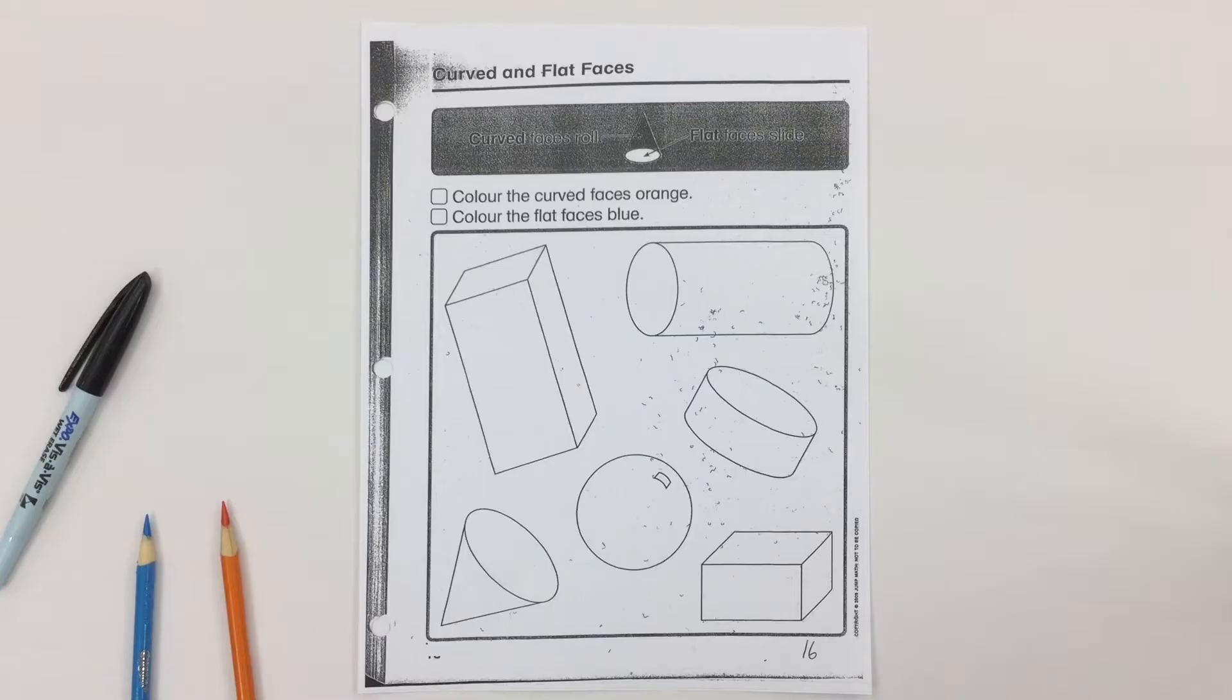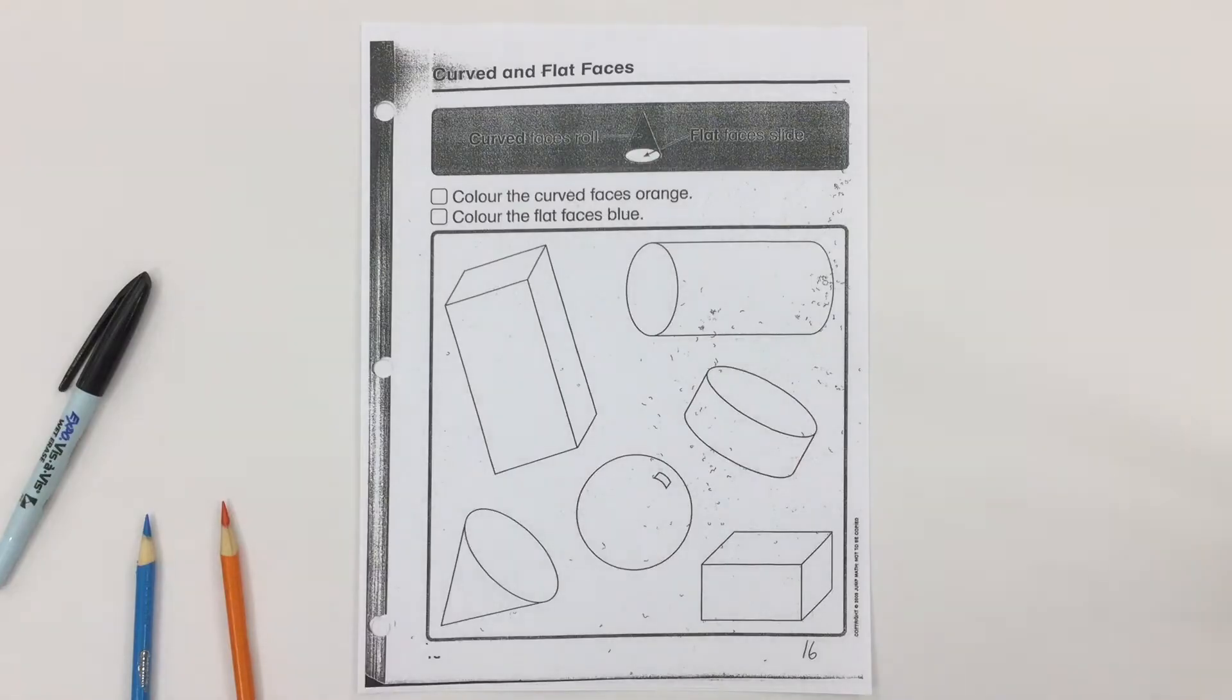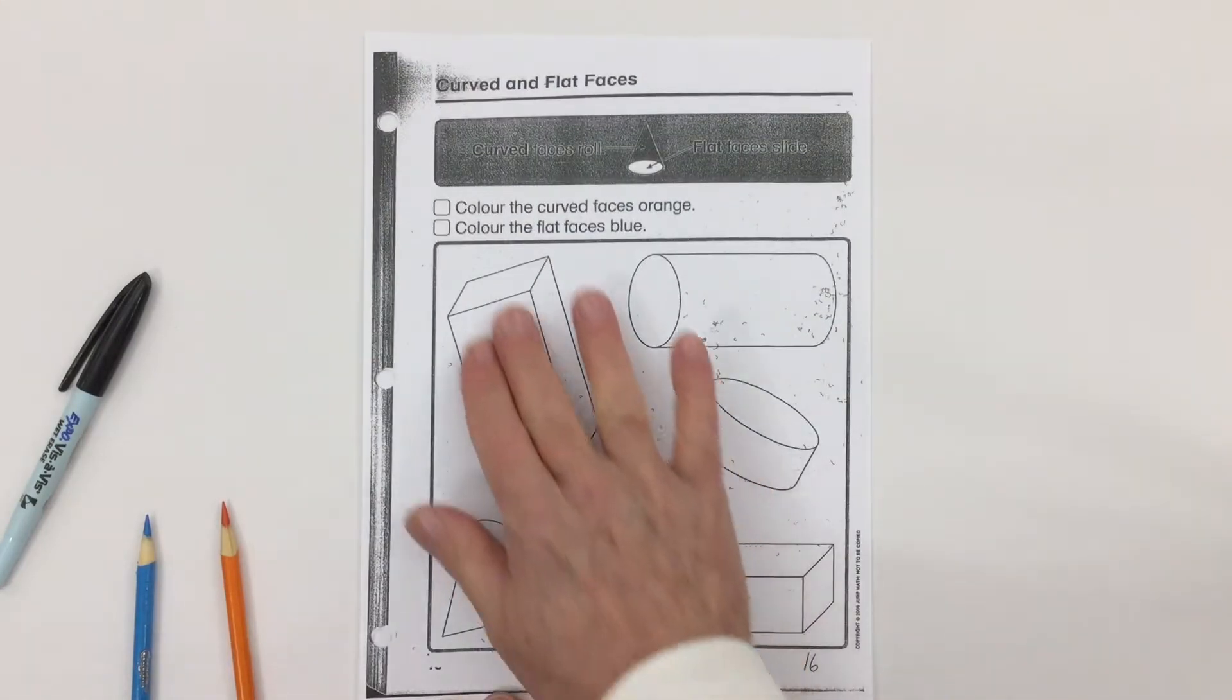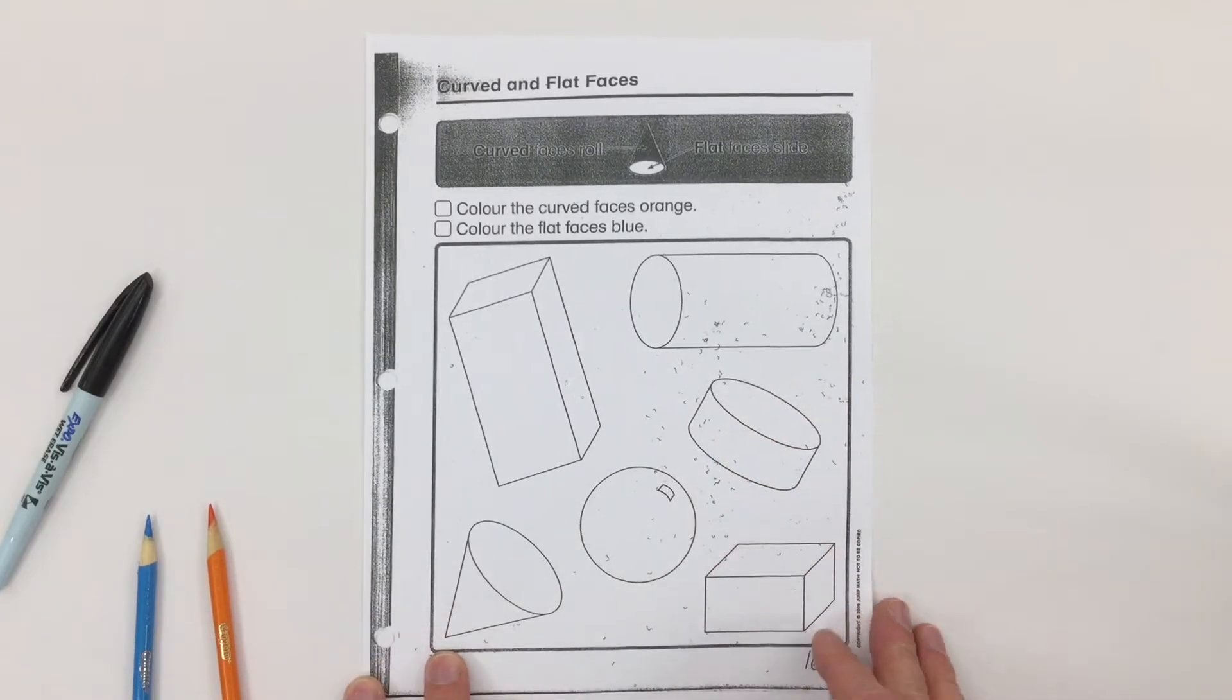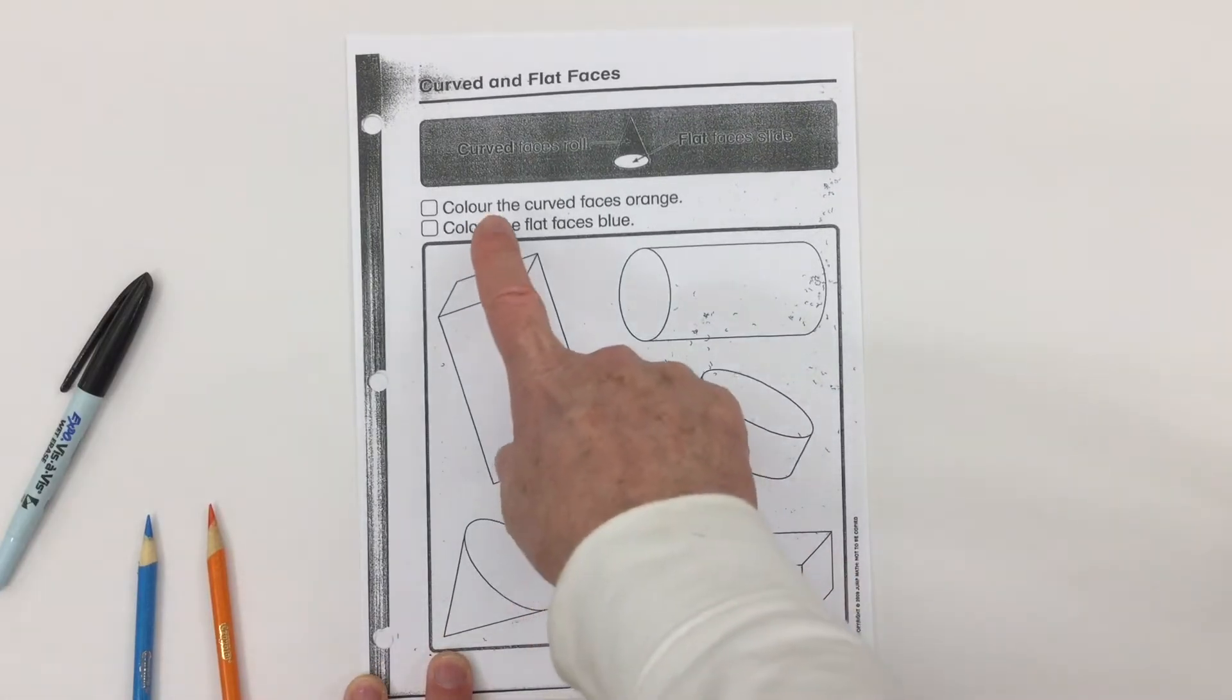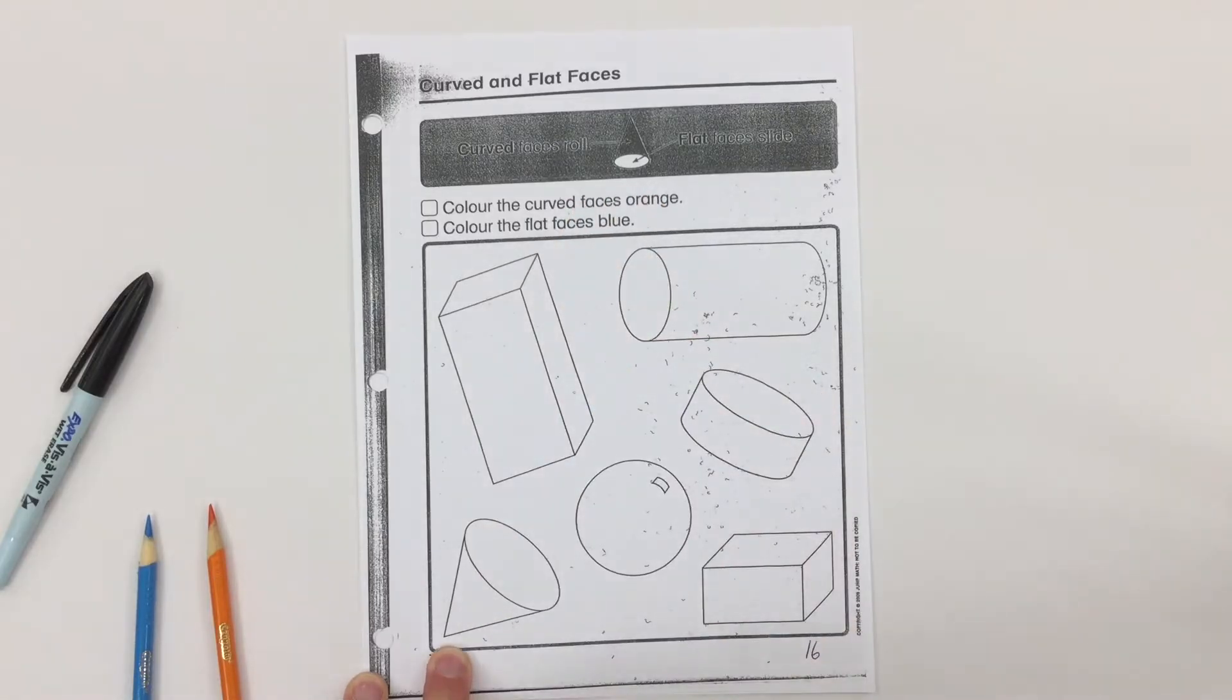Here we have a worksheet on 3D solids called curved and flat faces. The face is the side of that solid. It says color the curved faces orange and color the flat faces blue. Let's look at some of those shapes.